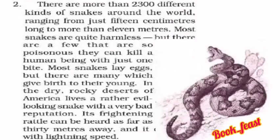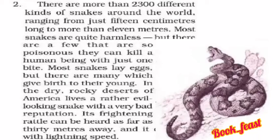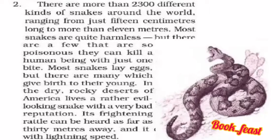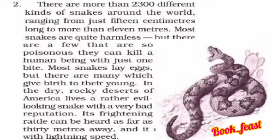Here are snakes. In the world, there are 2,300 kinds of snakes. The size of snakes ranges from 15 centimeters to 11 meters. That is the size range of snakes.